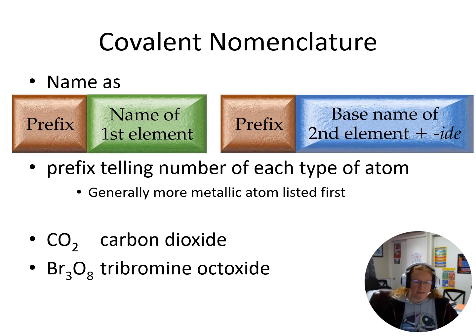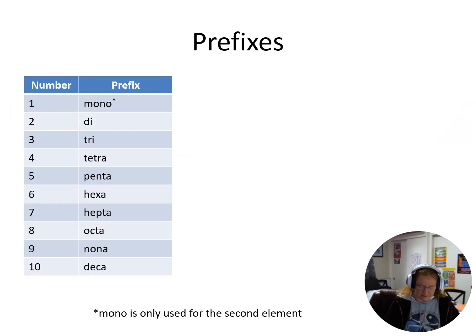Now our next one, that is Br3O8 - tribromine oxide. So now I have more than one of my first element, so I do indeed need to use that prefix. So what are these prefixes? We have mono, di, tri, tetra, penta, hexa, hepta, octa, nona, and deca.